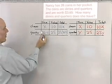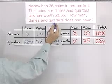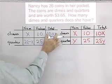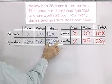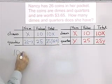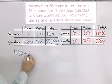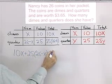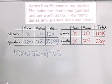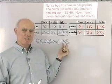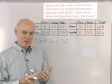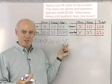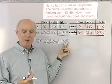Going back to our first table — the total amount she has in dimes and quarters is $3.65. That's the total in dimes plus the total in quarters. So 10 times X plus 25 times (26 minus X) must equal 365. I'm writing 365 because I have the coin values in cents — 10 cents and 25 cents — so the total must also be in cents. $3.65 equals 365 cents.